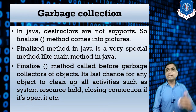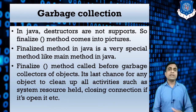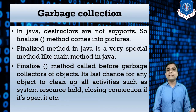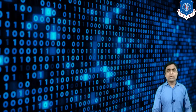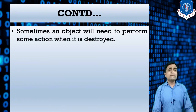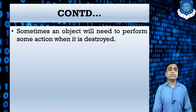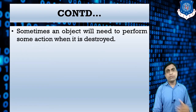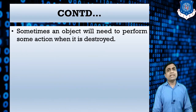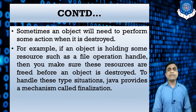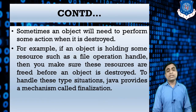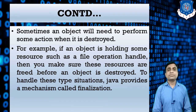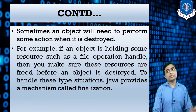The finalize() method works similarly to a destructor. So the answer to whether a destructor-like feature exists in Java is yes — through the finalize() method. Sometimes an object needs to perform some action when it is destroyed. For example, if an object is holding some resources such as file operation handling, you must make sure these resources are freed before the object is destroyed. To handle these situations, Java provides a mechanism called finalization.